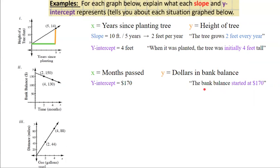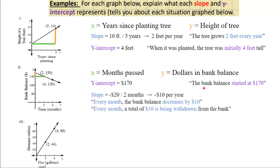Next, our slope. Another slope triangle will help us easily find that the slope is negative $20 per two months, or negative $10 per month.